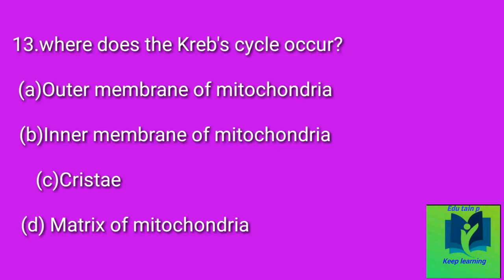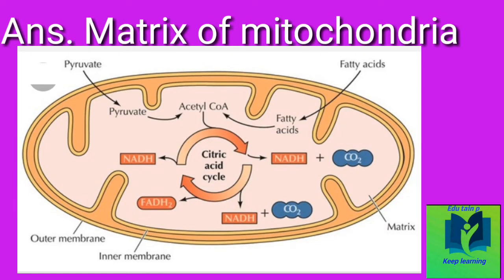Where does the Krebs cycle occur? Option A: In the outer membrane of mitochondria. Option B: In the inner membrane of mitochondria. Option C: Cytoplasm. Option D: Matrix of mitochondria. Answer: In the matrix of mitochondria.